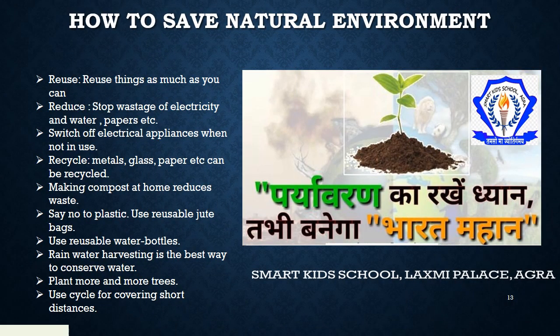At last, we see some small but effective solutions for balancing the natural and human environment. Number 1: Reuse — reuse things as much as you can; हमें वस्तुओं का बार-बार इस्तेमाल करना चाहिए। Reduce — stop wastage of electricity and water, papers, etc.; हमें चीजों का कम से कम इस्तेमाल करना चाहिए जैसे बिजली की बचत, पानी की बचत और paper आदि की भी बचत करनी चाहिए।